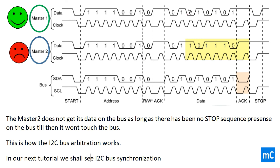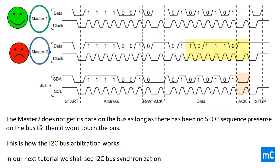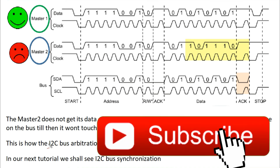All of Master 1's written data will be available on the bus. Master 2 does not get its data on the bus as long as there is no stop sequence on the bus — until then it won't touch the bus. This is how I2C bus arbitration works. Post your doubts in the comments section. In our next tutorial we shall see I2C bus synchronization. Thanks for watching — don't forget to subscribe to this channel.